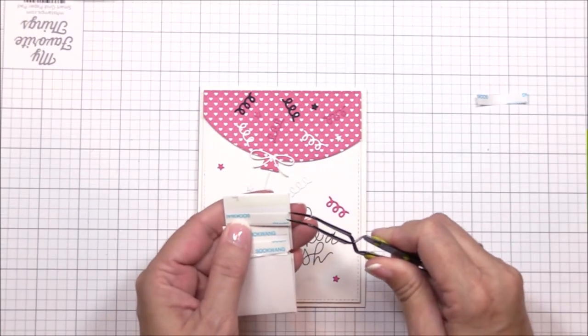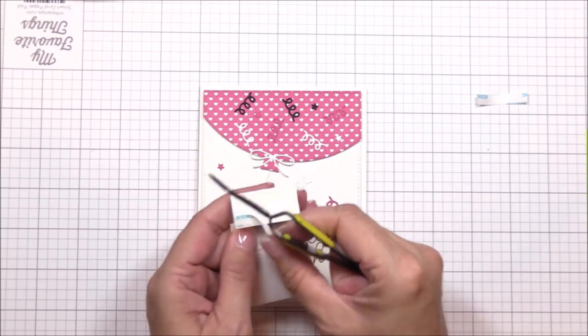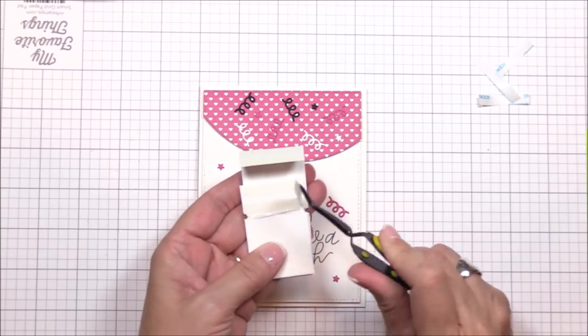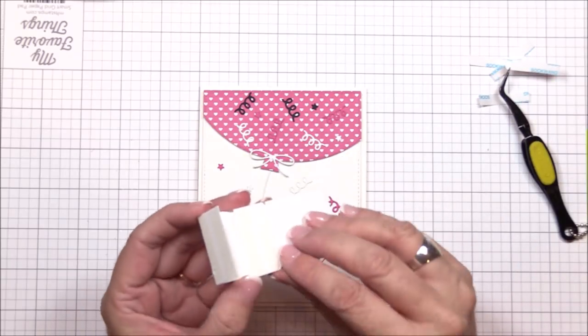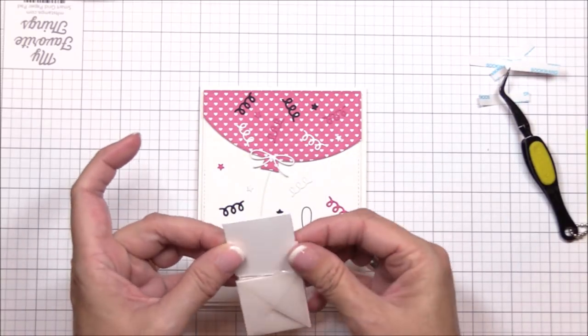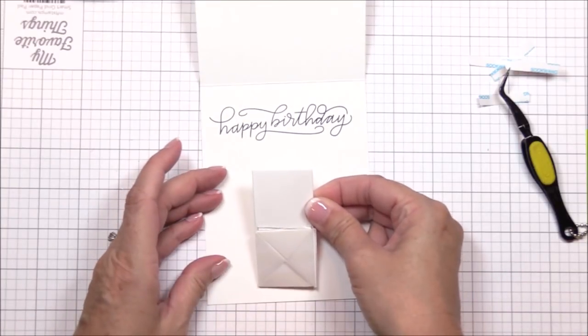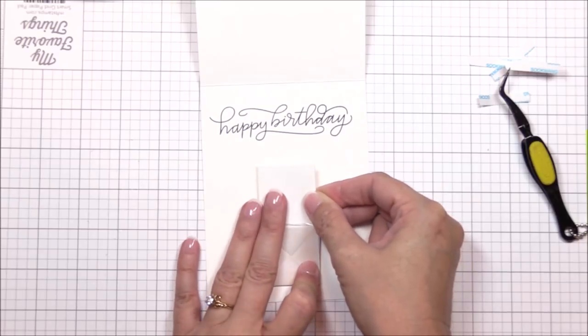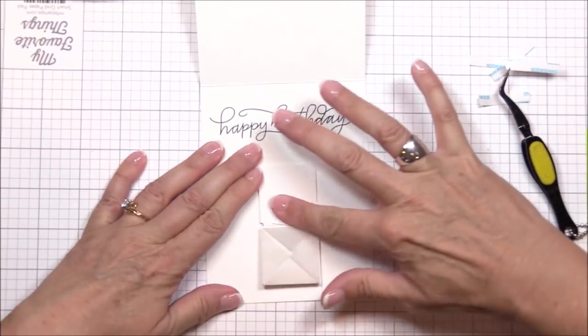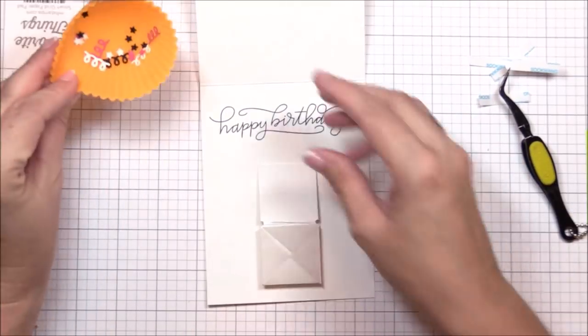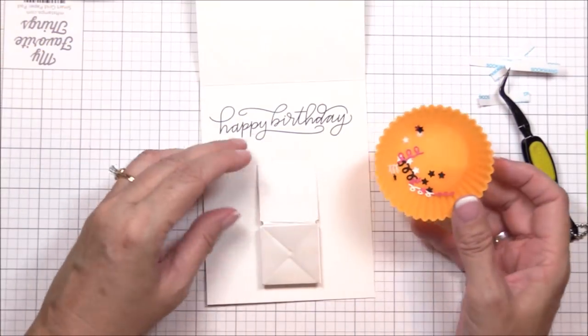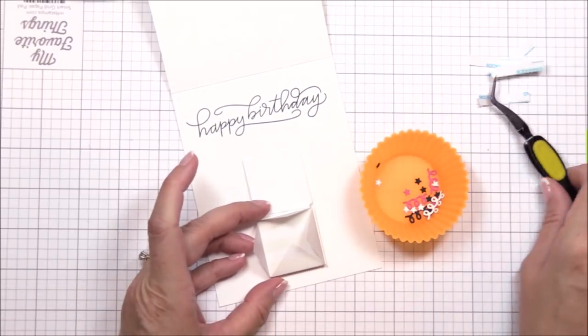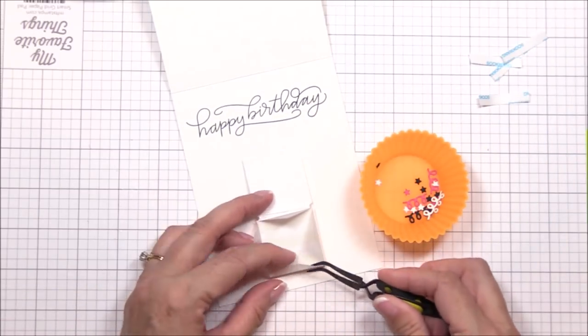I'm removing the release paper from the end tabs on the confetti flinger mechanism and you can see that I've folded the mechanism so that the confetti pouch is at the bottom and that the two end tabs and the third box are folded towards the back and are laying flat. Now I'm adhering the mechanism to the inside of the card making sure to position it so that when I lock the flinger in place it won't get caught up in the top fold of the card base. I found that if I position the flinger so that the bottom edge of the mechanism is about a quarter inch from the bottom edge of the card base I have plenty of room to lock the mechanism in place.